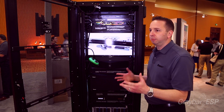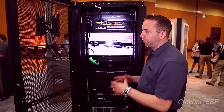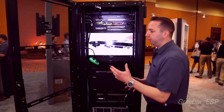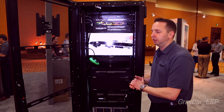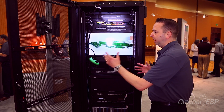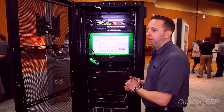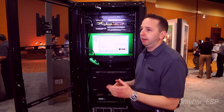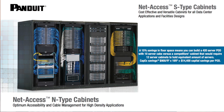The system is made of components, so let's talk about the different components within it. We have the cabinet — Panduit has two cabinet lines: the Net Access S-type line and the Net Access N-type line. One line is meant more for network equipment and one line is meant more for server equipment.